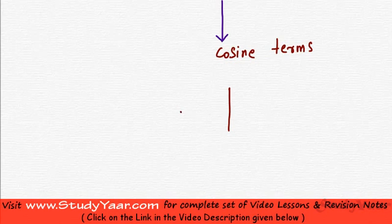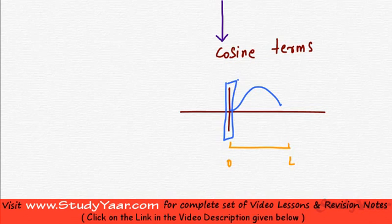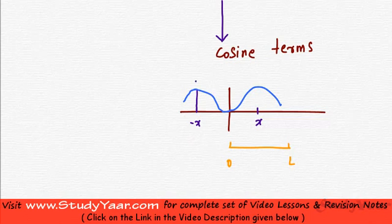Let's suppose that my function is like this — it's a general function, I am just assuming its graph is like this, it could be anything. So what I am saying is between 0 to l, my function is like this. What I am going to do now is I am just going to take a reflection of this function along the y-axis. So if you have a point x, then over here you are going to have a point minus x, and if over here you have a value y, then since it is a reflection, over here also you will have the value of this function as y.